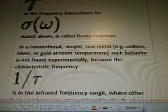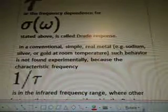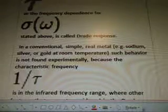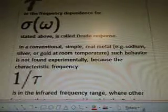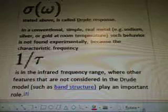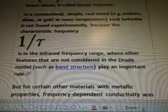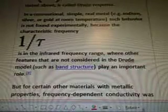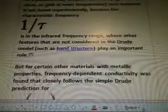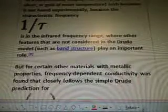In a conventional simple real metal, example sodium, silver, gold at room temperature, such behavior is not found experimentally because the characteristic frequency of 1 divided by T is in the infrared frequency range, where other features that are not considered in the Drude model, such as band structure, play an important role.